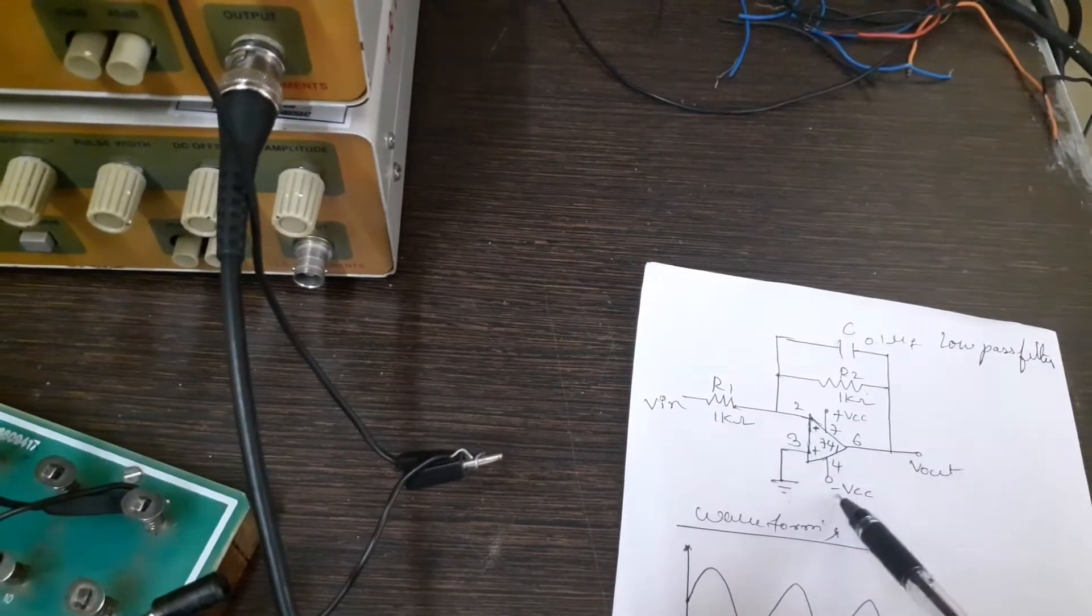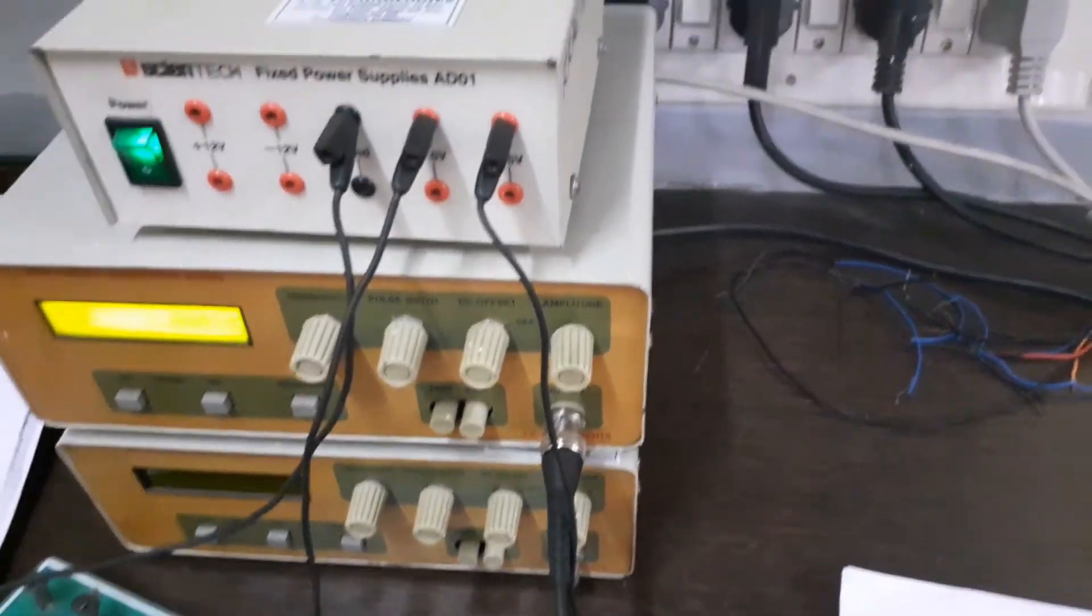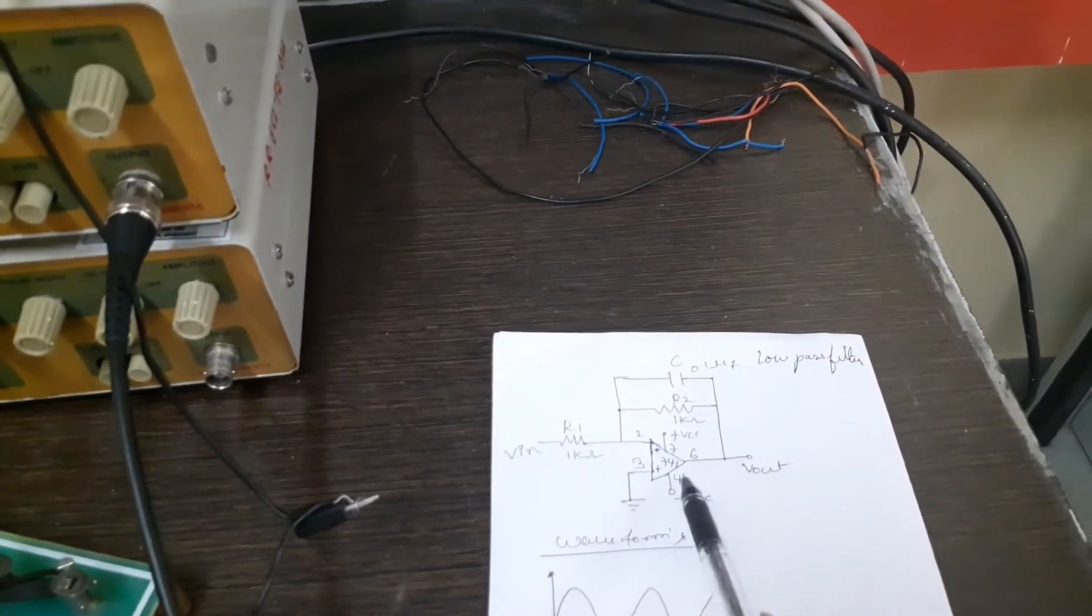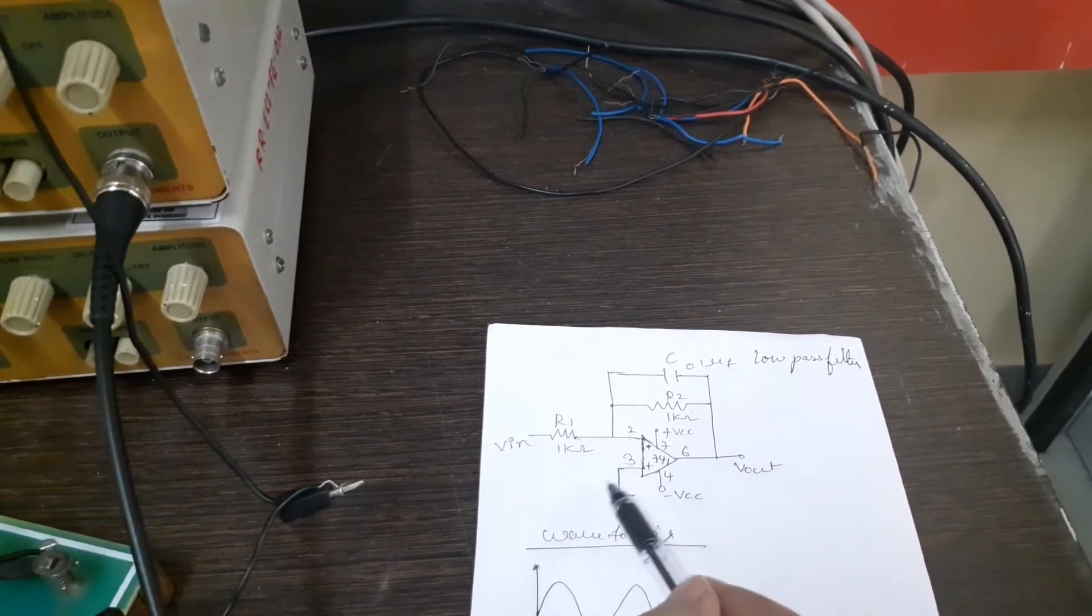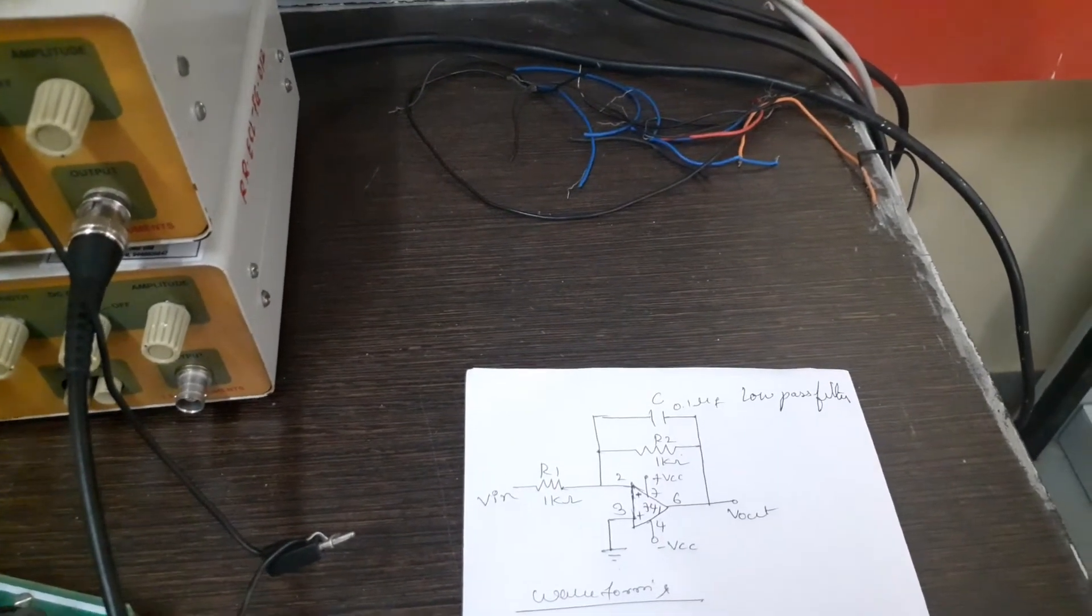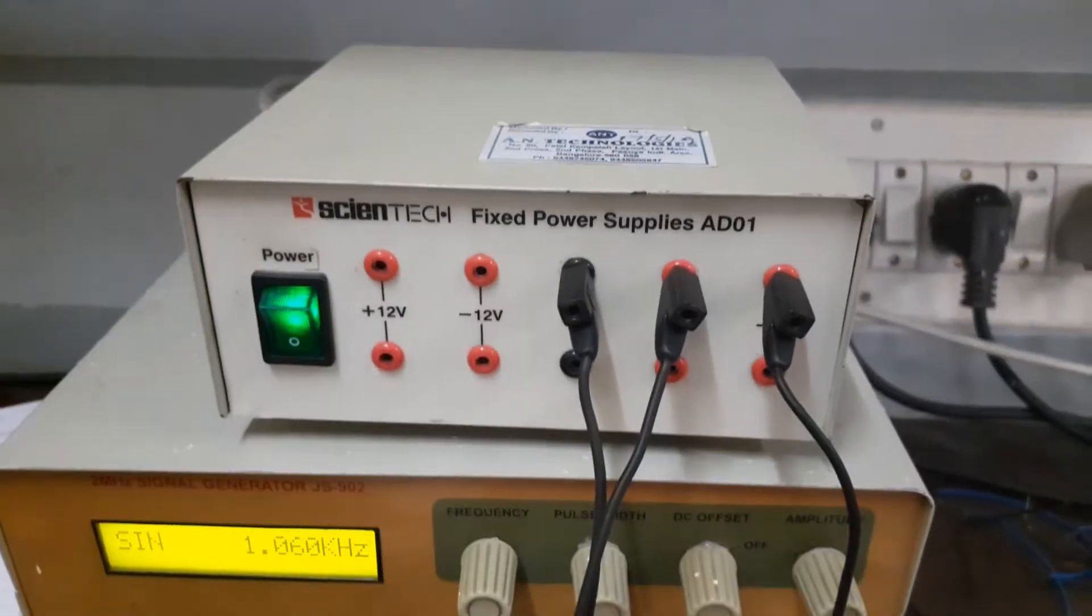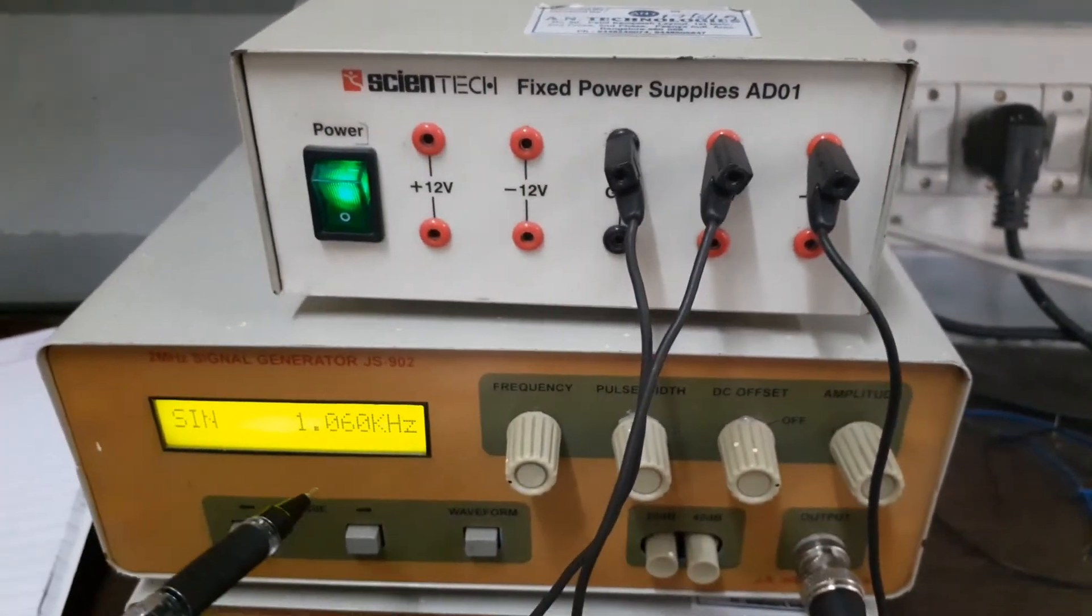The VCC is connected, you can see, plus 5 volt and minus 5 volt at pins 7 and 4 of the op amp. Now here we need a signal generator generating a sine wave frequency of 1 kilohertz.